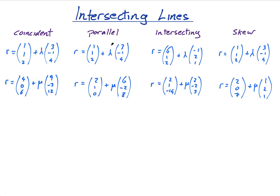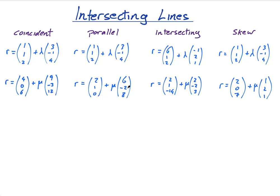Parallel lines — you know what parallel is in 2D: same gradient. It's the exact same in 3D. The way we know lines are parallel is that the direction vectors are again parallel, going the same direction. I don't even care about the position vectors. So (3, −1, 4) is parallel to (6, −2, 8) — this times two gives this.